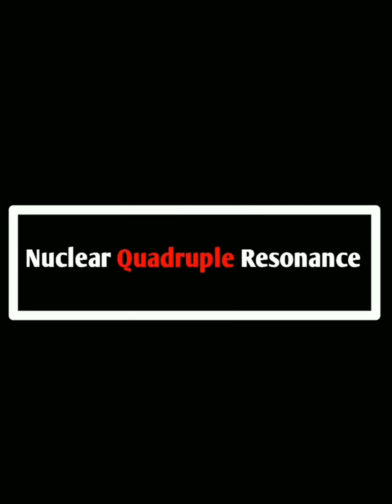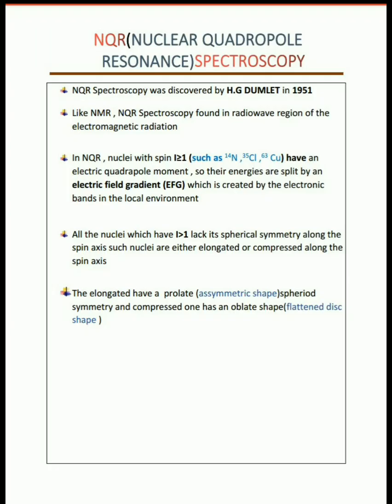Good morning to all. NQR spectroscopy, or nuclear quadrupole resonance spectroscopy. We already studied about NMR spectroscopy. NMR spectroscopy is found in the radio frequency region of the electromagnetic radiation. Similarly, NQR spectroscopy is also found in the radio frequency region of the electromagnetic radiation.